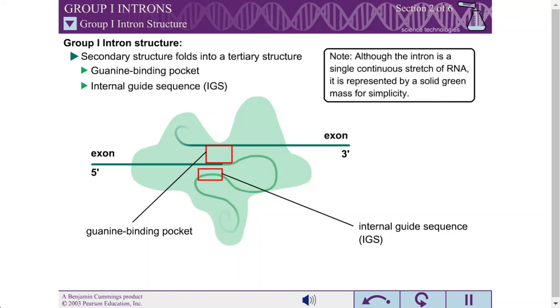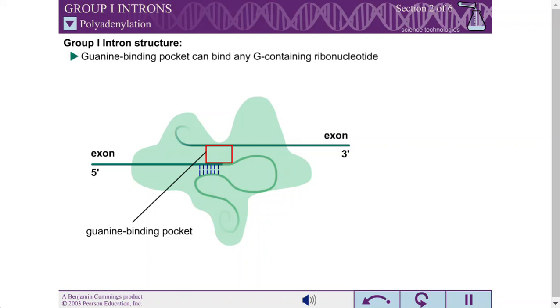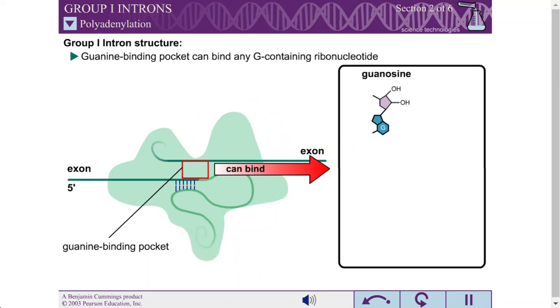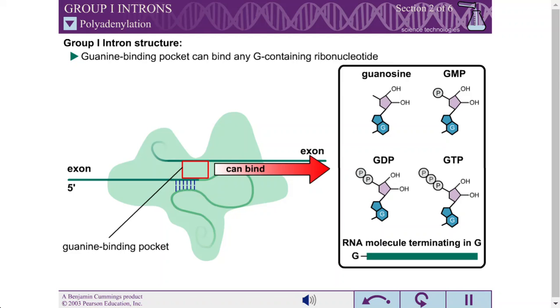The internal guide sequence is capable of base pairing with the exon at the 5' end of the RNA molecule. The guanine binding pocket is capable of binding any guanine-containing ribonucleotide, including guanosine, GMP, GDP, GTP, or an RNA molecule that terminates in a guanine residue.